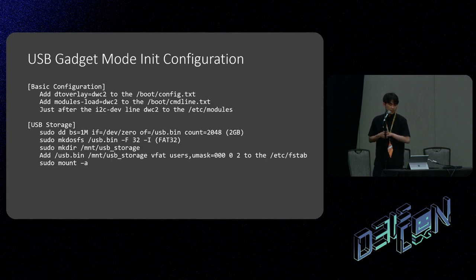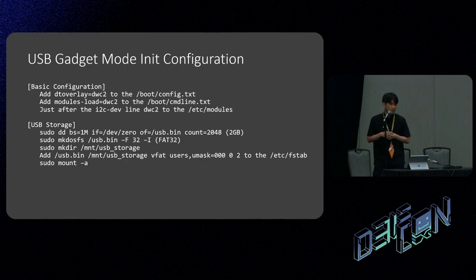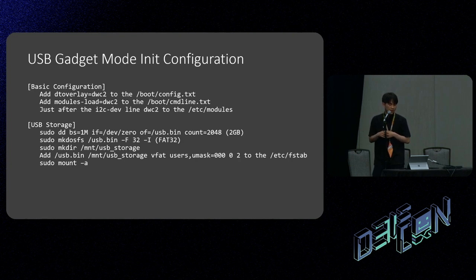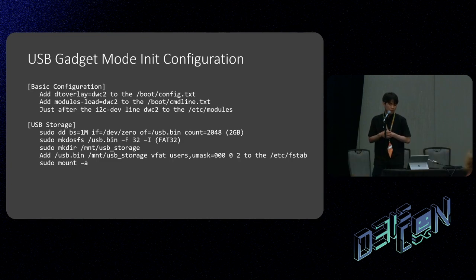This slide shows the initial setup for USB gadget mode, which we do in the first step. Due to time limits I can't explain every detail, but you can find details on the internet — there are already many good articles explaining how to make a Raspberry Pi act as a USB storage.